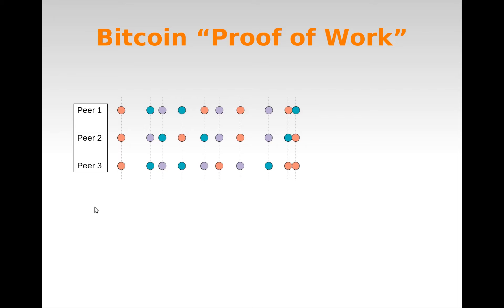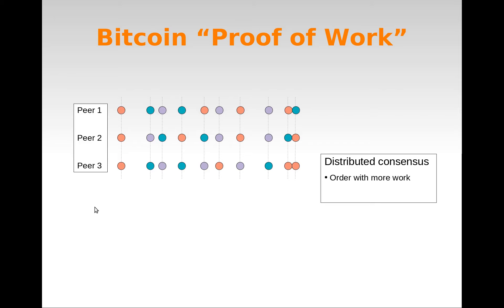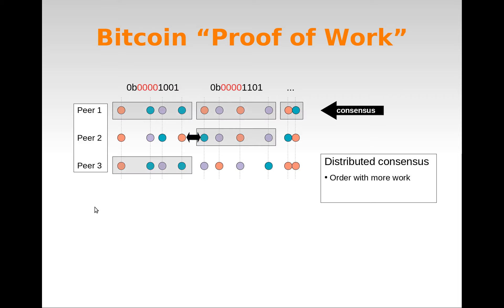Many other systems approach peer-to-peer content dissemination. Bitcoin is also a many-to-many system that solved the consensus problem with proof-of-work. Each node had a different order of delivery, but the important thing is that one of these orders always has more work associated, and it becomes the network consensus.